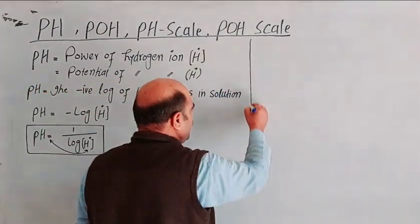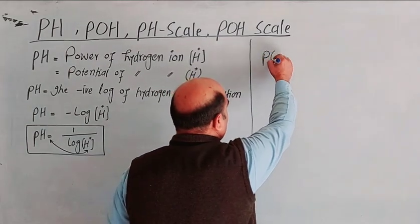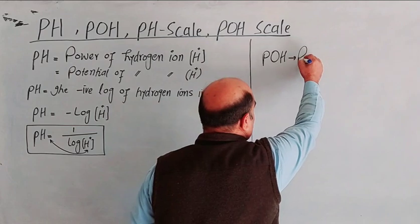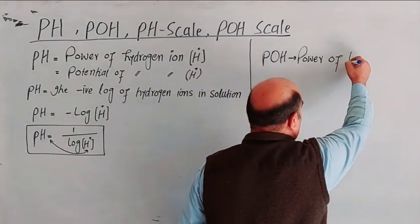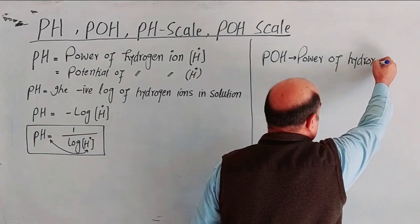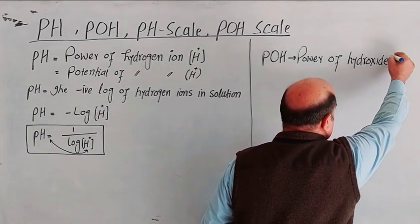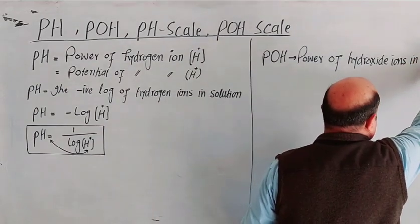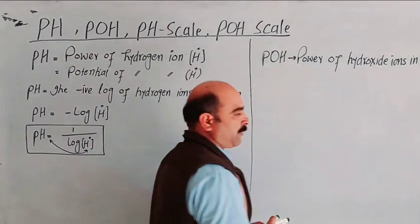Now, what is pOH? Again, 'p' means power — the power of OH, that is, hydroxide ions in solution. pOH is the potential or capacity of hydroxide ions in solution.